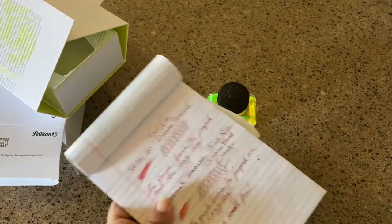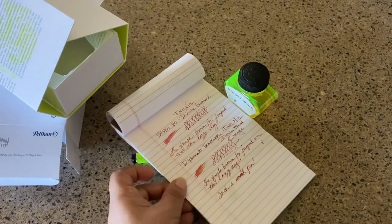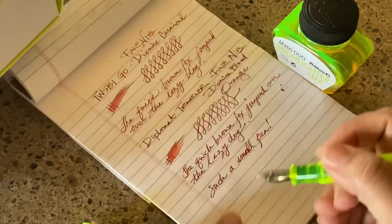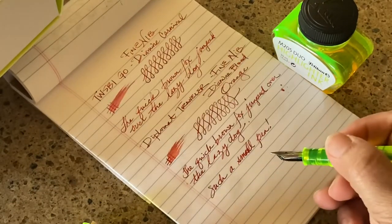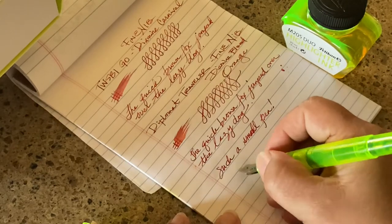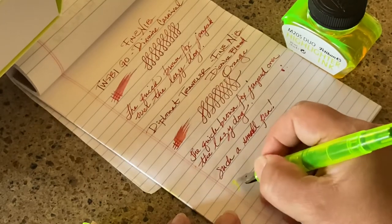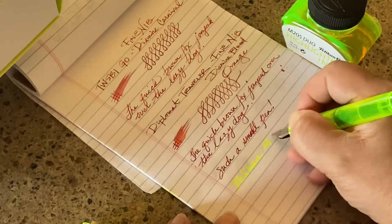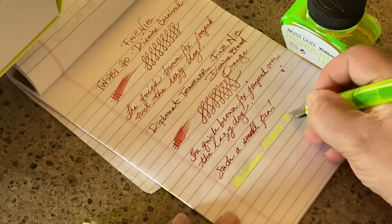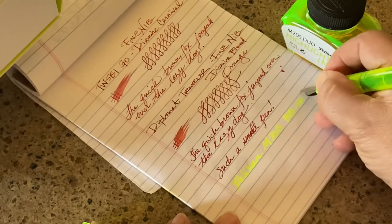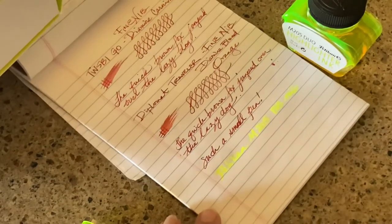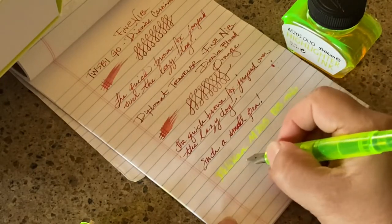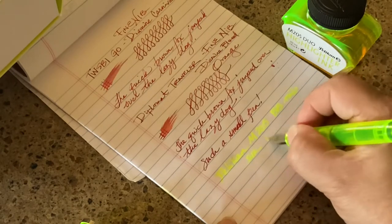The ink is supposed to be a yellow-beige type of fluorescent neon ink, but if you can tell, this ink is more of a greenish-yellow. I'm going to do a sample for you here—Pelikan M205 in the BB nib with the highlighter ink.